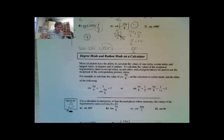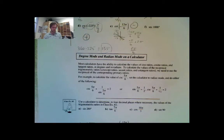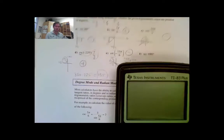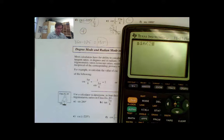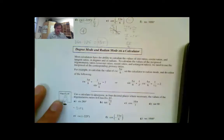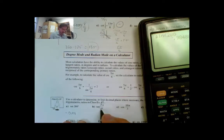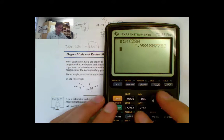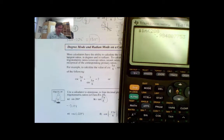Example 3 asks us to use a calculator to determine to four decimal places the value of each trigonometric ratio. First, sine 280°. I set my mode to degrees and enter sine 280, getting negative 0.9848. Then for tan 7π/6 — this is in radians because there's a π. I change mode to radians, enter tan(7 × π ÷ 6), and get 0.5774.